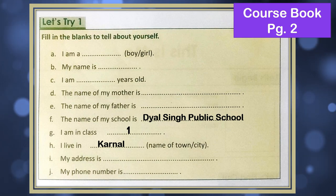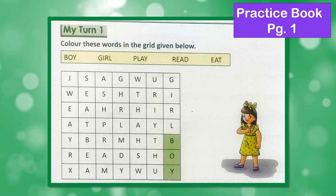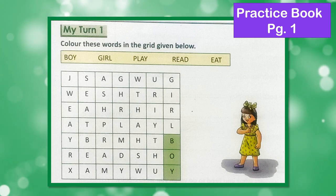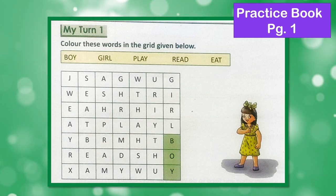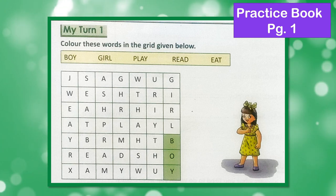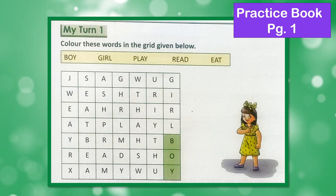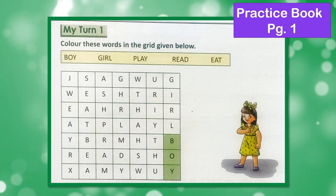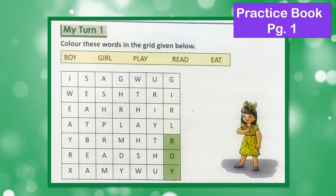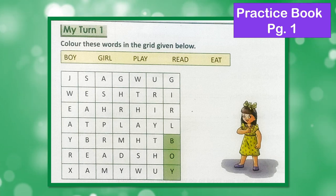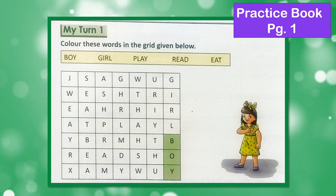And then you can learn it. Now here is your homework. In your practice book on page number one, you have a 'My Turn' activity. Here you will try to find the words given in the box in the grid given below and color them. One has been done for you — 'boy.' The other words are: girl, play, read, and eat. These you will find in the grid and color them. You can use different colors also. Try to do it yourself today, and tomorrow we will discuss the answers.